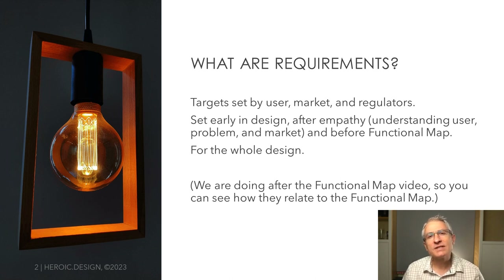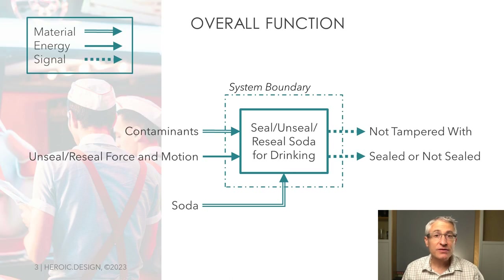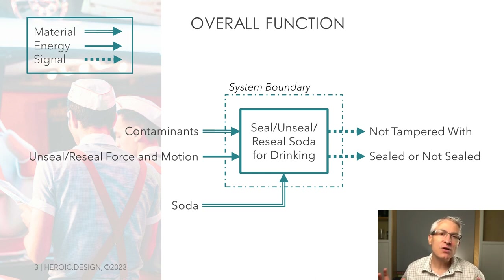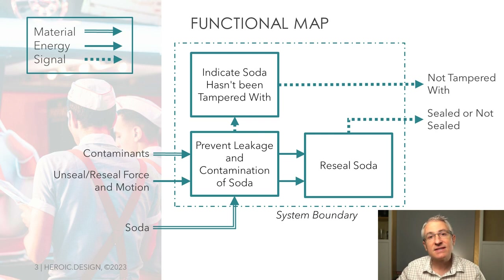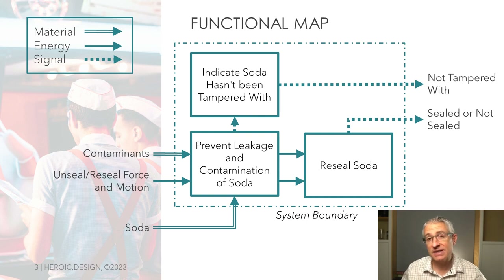Requirements usually speak to the whole design, because we haven't broken the problem down into sub-functions yet. A quick review of our overall function and functional map: the overall function is seal, unseal, reseal soda for drinking. This is just the overall function for the top part of the solution. The functional map has three sub-functions: prevent leakage and contamination of soda, indicate soda hasn't been tampered with, and reseal soda.